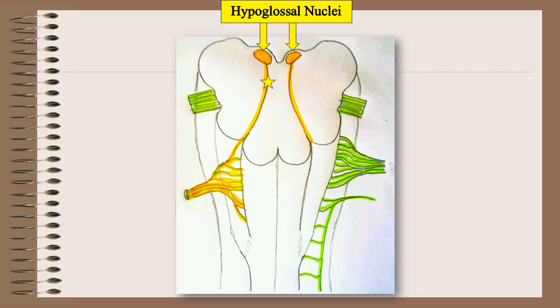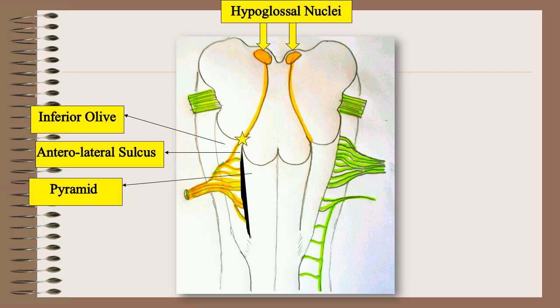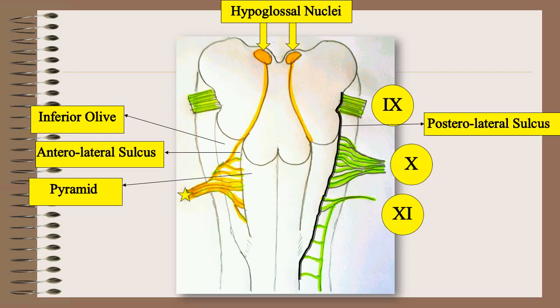The axons stream ventrolaterally through the reticular formation, and the nerve emerges from the medulla in the anterolateral sulcus between the inferior olive and the pyramid, as a series of 10 to 15 rootlets on each side, anterior to the rootlets of cranial nerves 9, 10, and 11, which arise from the posterolateral sulcus.